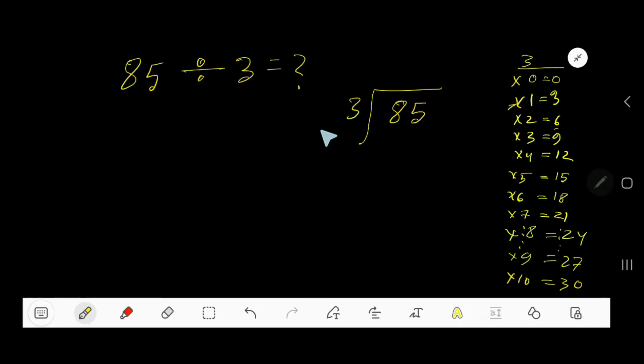85 divided by 3. Here 3 is a divisor, so we need the multiplication table of 3. 3 times 0 equals 0, 3 times 1 equals 3, 3 times 2 equals 6, 3 times 3 equals 9, 3 times 4 equals 12. To find the multiplication table of 3, just add 3 with the previous step: 0 plus 3 equals 3, 3 plus 3 equals 6, 6 plus 3 equals 9, 9 plus 3 equals 12, 12 plus 3 equals 15, 15 plus 3 equals 18. This process will continue.